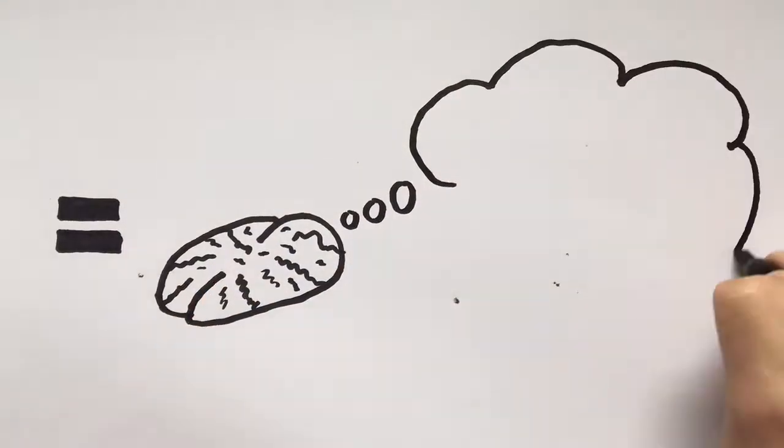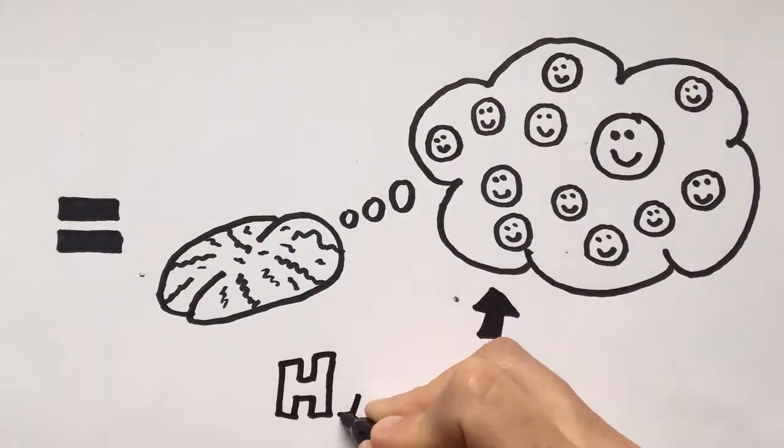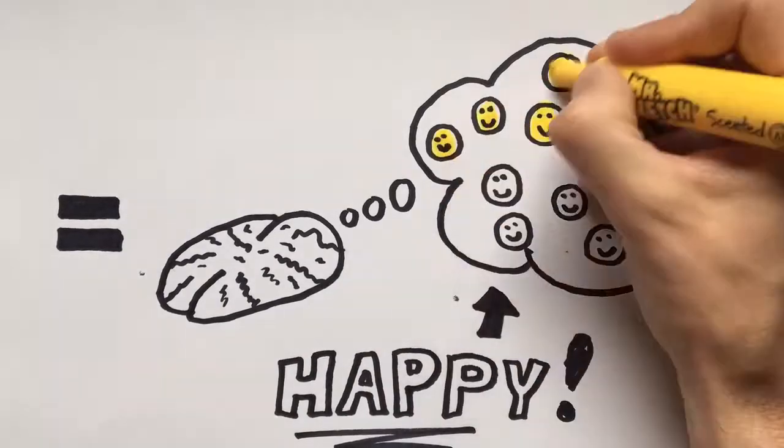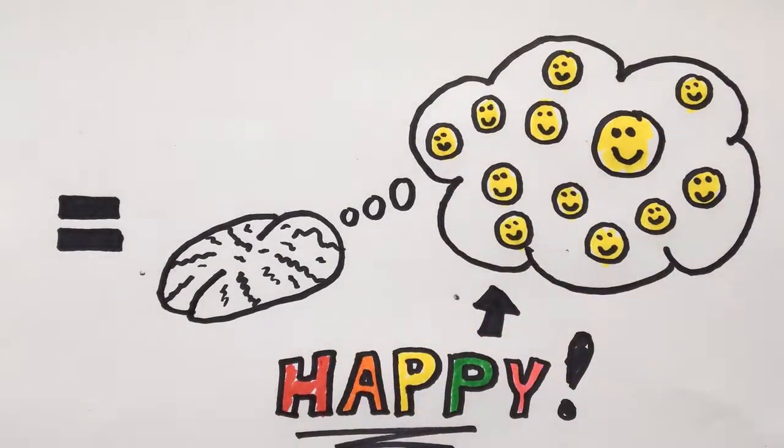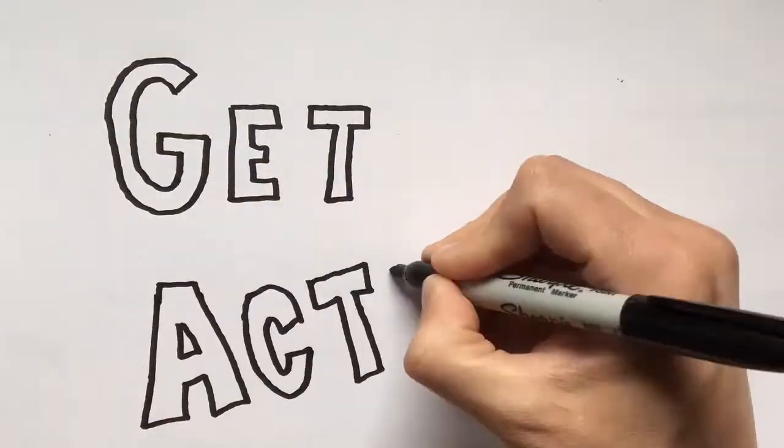Also when you exercise, there's a chemical that is released in your brain called endorphins. This little chemical helps us feel happy. So make sure you are getting your 60 minutes a day and get active.